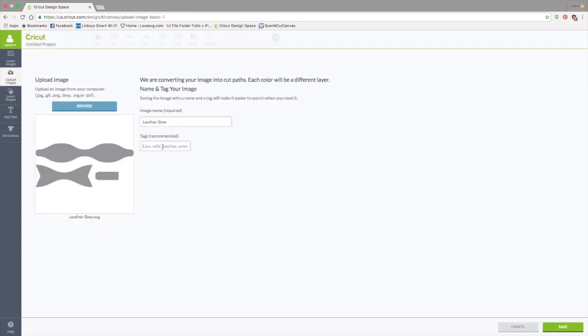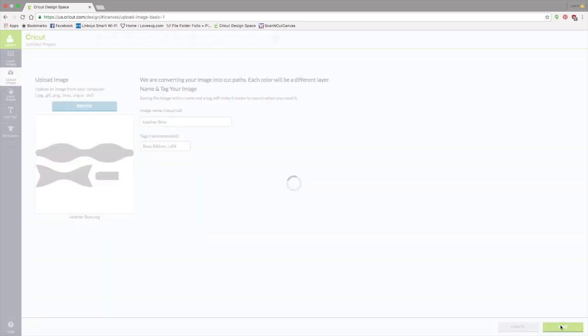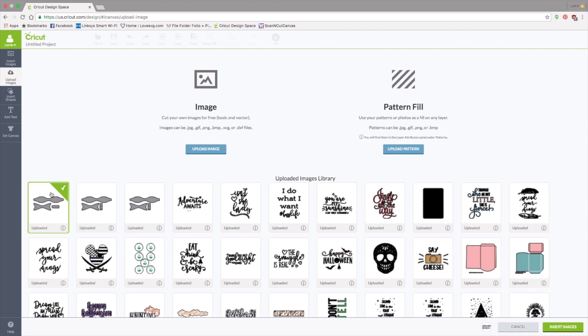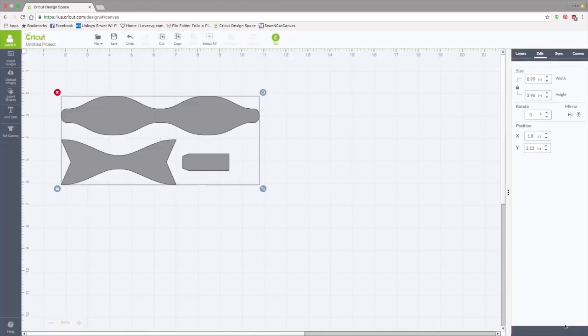You can tag it right here. I'm going to call it bow, ribbon, and I'm going to put my initials. And then click save. It will be the first item right here in the project bin. Click on it and click insert images. Perfect.